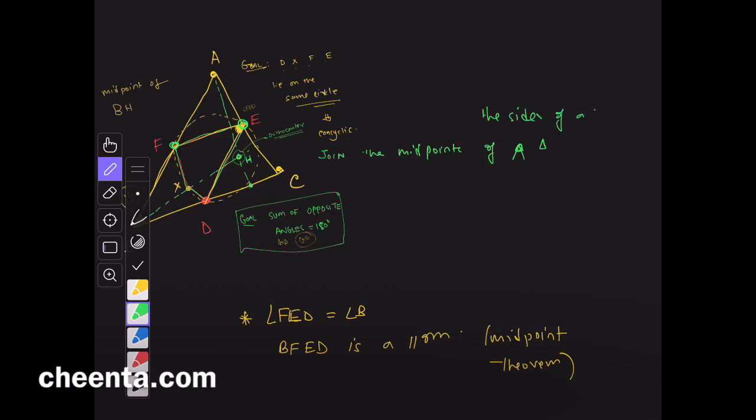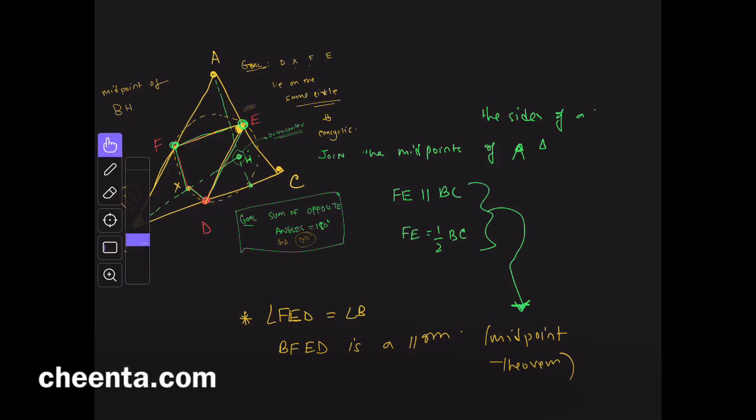And you get FE parallel to BC and FE is half of BC. This is the content of the midpoint theorem, which we are using directly for the purpose of this problem.